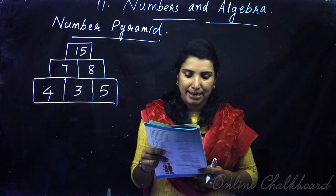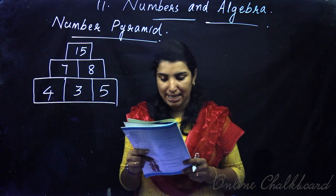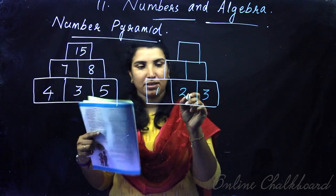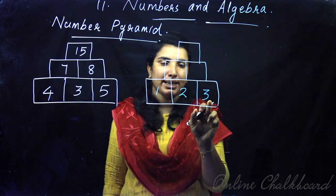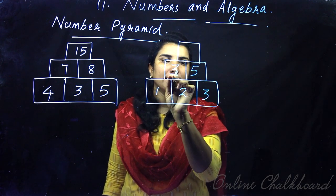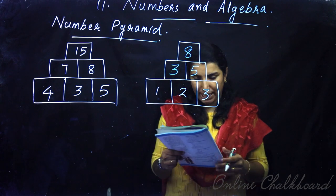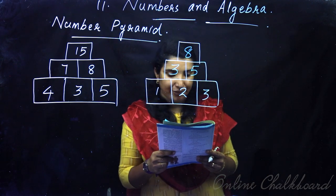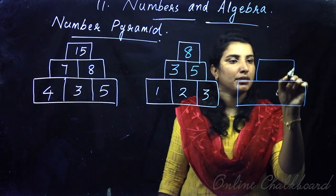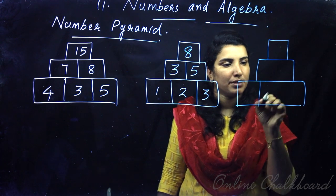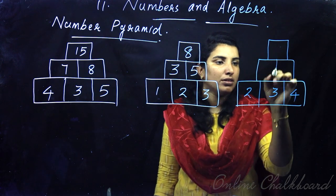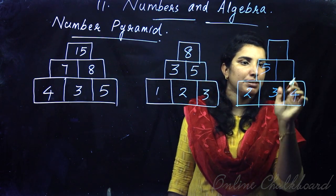Let's make such a pyramid starting with these numbers: 1, 2, 3. Let's construct this pyramid. 1, 2, 3. Let's start with 2, 3, 4. 1 plus 2 is 3. 2 plus 3 is 5. 3 plus 4 is 7.